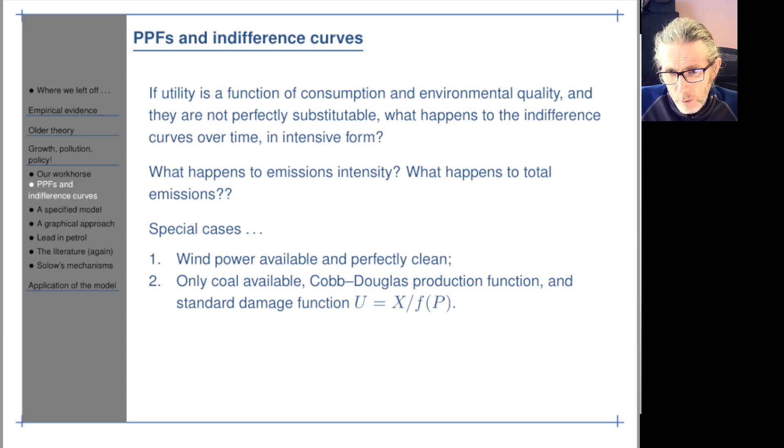But when we're very rich the cost of the damages dominates the extraction cost. So the total cost of coal is basically the damage of burning it which grows at the growth rate. Given that we have Cobb-Douglas we expect constant coal use and constant emissions. So that's if there's no alternative to burning coal, no end of pipe way to clean up. That's a little bit like the Stokey case that we worked through earlier.